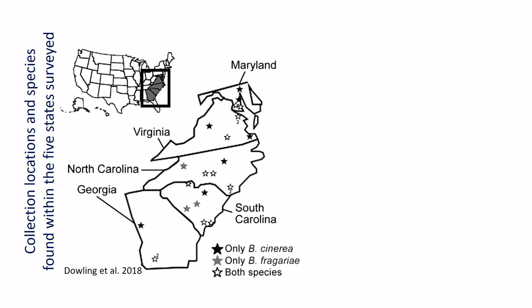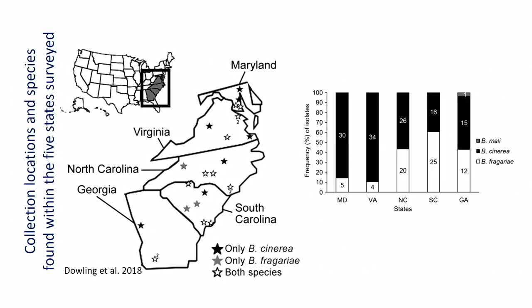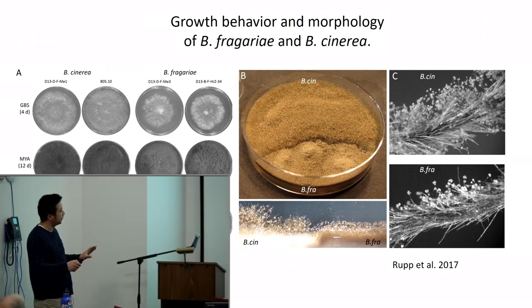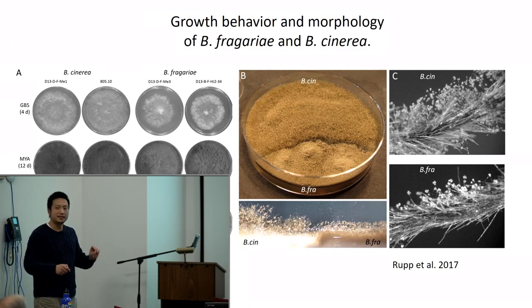They did a survey a couple of years ago to identify Botrytis species from strawberries in different states including Maryland. Botrytis cinerea is the black bar and Botrytis fragariae is the white bar. Both species were found in five different states. Fragariae, as a relatively new species, was found to be pretty widespread in the southeast. They also look different — cinerea has more aerial mycelia, whereas Botrytis fragariae seems to be more compact and dense.